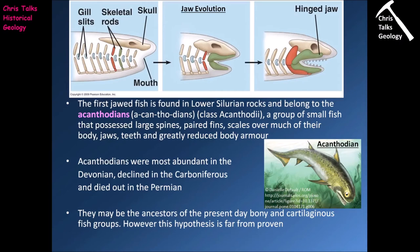The first jawed fish is found in lower Silurian-aged rocks and belongs to the acanthodines — a group of small fish possessing large spines on their back, paired fins, scales over much of their body, jaws, teeth, and greatly reduced body armor. They still had mineralized plates but not the very heavy-duty armor of the ostracoderms. The acanthodines were most abundant in the Devonian, began to decline into the Carboniferous, and died out during the Permian. They may be the ancestors of present-day bony and cartilaginous fish, however this hypothesis is far from proven.